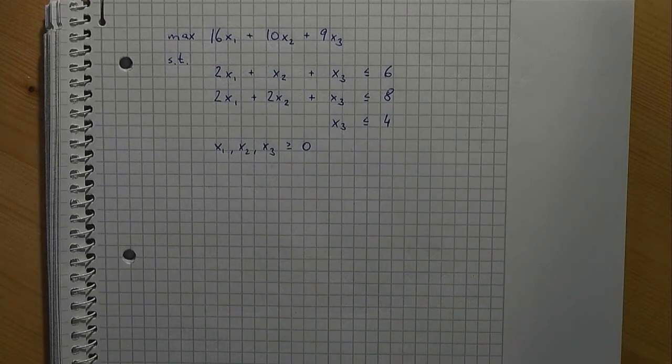Recall that X1 represents the number of tables. How can we formulate such a constraint? As always, give yourself a try and pause the video now.